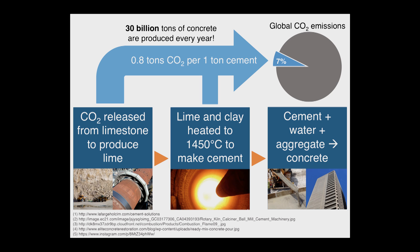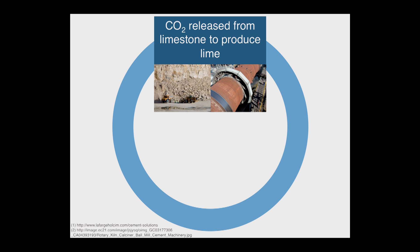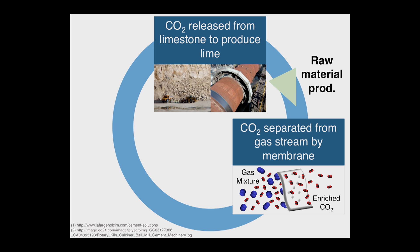Our research seeks to reinvent this process of cement production by closing its CO2 loop and making it a closed-loop process. The first step of our process begins similarly to cement production, by quarrying limestone and producing lime. But instead of emitting the CO2, we instead capture it and separate it from the gas stream using a selective membrane.